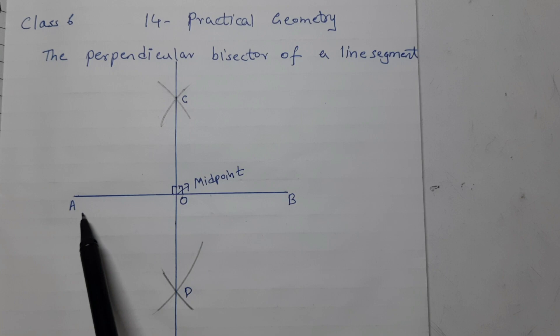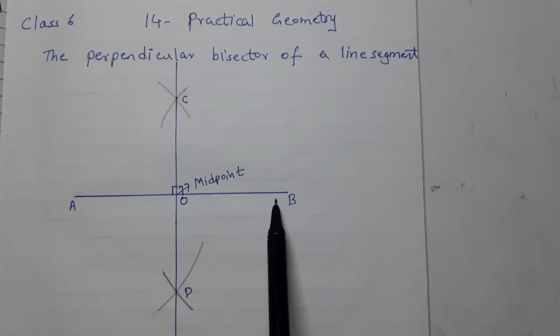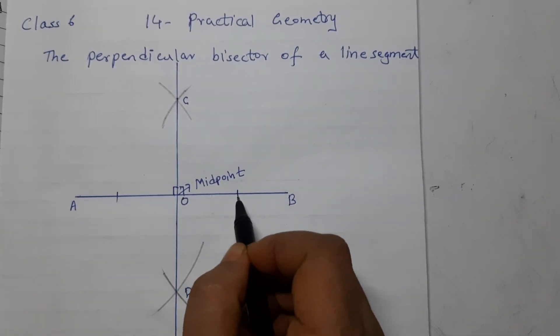And bisector means OA is equal to OB. This length is equal to this length.